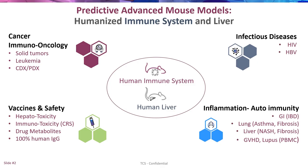Just a few words about Transcur Bioservices. Ten years ago we started the company, we are now based in France, with 70 collaborators including 21 PhDs. We have focused our company on developing more predictive advanced mouse models, among them the two most important are the humanization of the immune system — which I will focus on today — and the humanization of the liver, so the ability to reconstitute human hepatocytes in a fully humanized liver in a rodent model.